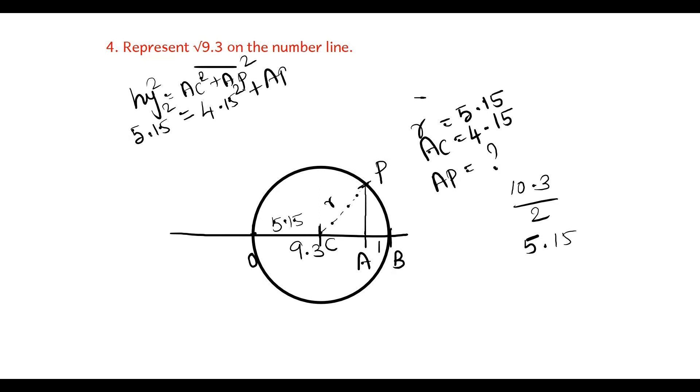5.15 square minus 4.15 square will be equal to AP square. 26.522 minus 17.22, which is equal to AP square. If I subtract these two values, I will get 9.3, which is equal to AP square.